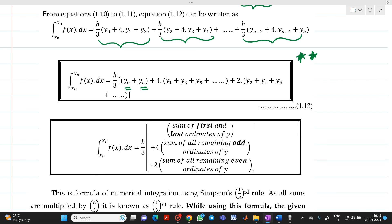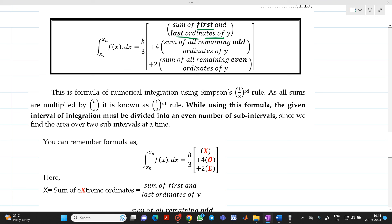you will get a formula for Simpson's one third rule which will be h/3, y0 plus yn that is sum of first and last ordinate of y plus 4 into, here if you see, you will observe that there are odd terms. So, we can write sum of all remaining odd ordinates of y plus 2 into, here you will observe that even terms, y2, y4, y6 like that. So, plus 2 into sum of all remaining even ordinates of y.